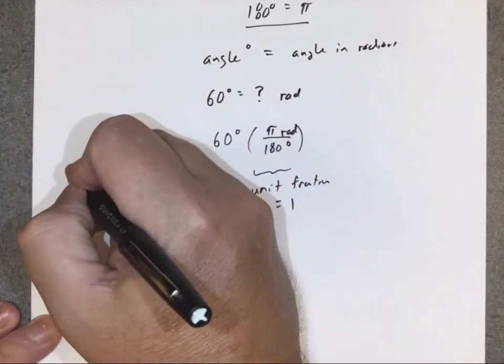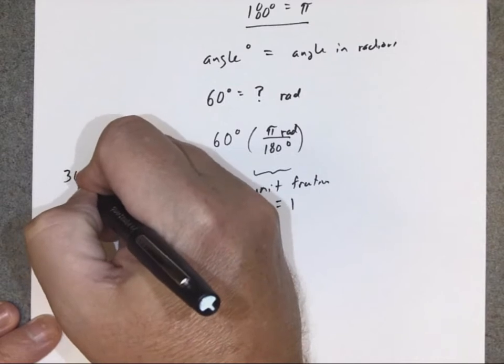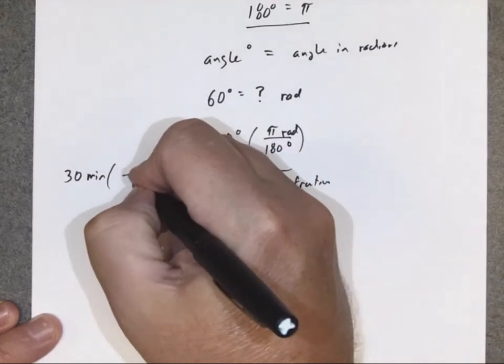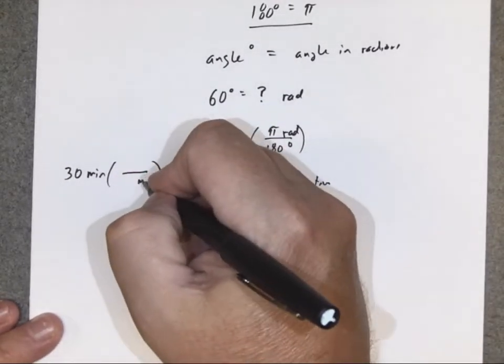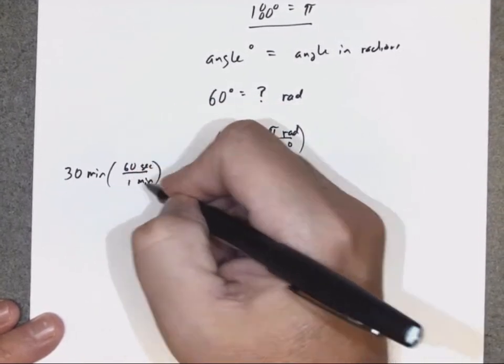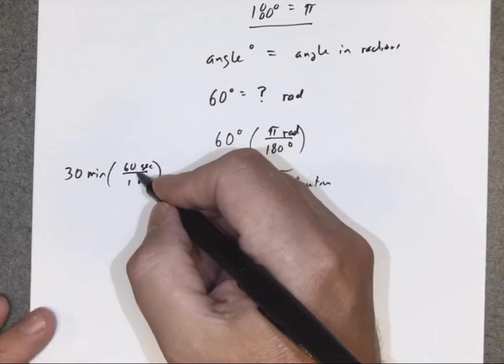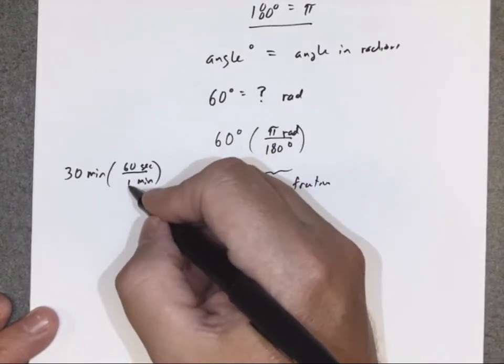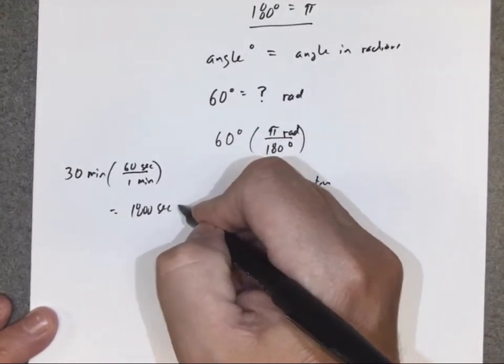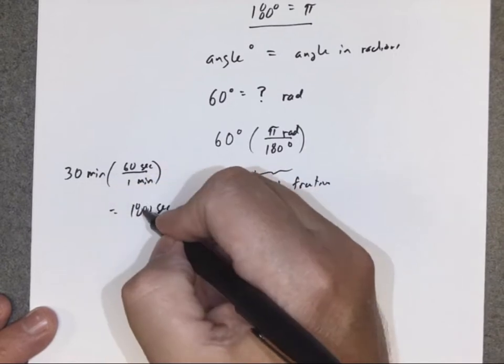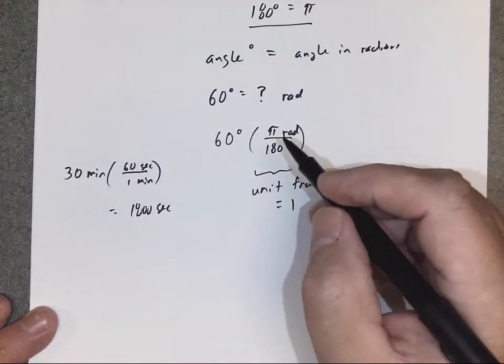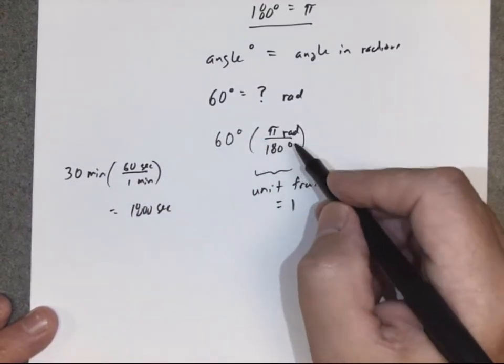It's just like if I were to say, let's convert 30 minutes into seconds. My unit fraction would be minutes in the bottom, seconds in the top. I know there are 60 seconds in one minute. 60 seconds in one minute are the same. So when you have two things that are the same divided, this equals one. Then you would have like 1800 seconds. So we've converted 30 minutes into 1800 seconds. This is the same time, just different units. Here, the same angle, just different units.